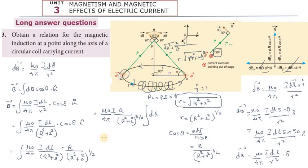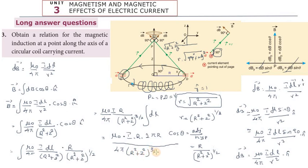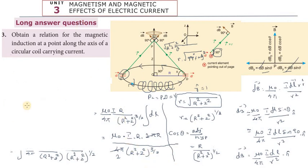So the integral of dL = 2πR. Therefore: B = (μ₀/4π) × i × R × 2πR / (R² + Z²)^(3/2) × k̂. The 2π in the numerator and 4π in the denominator simplify. R × R gives R², so the final answer is: B = μ₀iR² / [2(R² + Z²)^(3/2)] × k̂, where k̂ gives the direction along the axis.